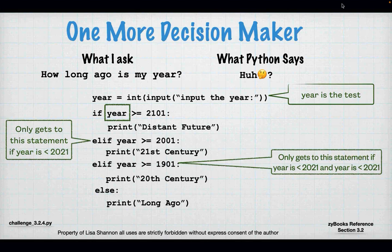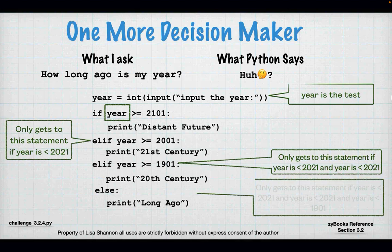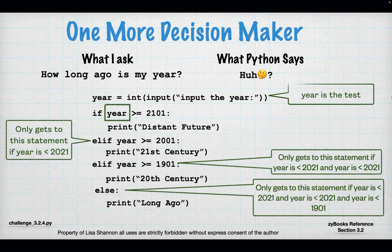So: if year > 2021, print 'distant future'; elif year >= 2001, print '21st century'; elif year >= 1901, print '20th century'; else print 'long ago'. The order matters here — if I put in a year like 1900, I need to make sure the sequence fails in the right order. I'll demonstrate this backward order in PyCharm to show why it becomes a logic error.